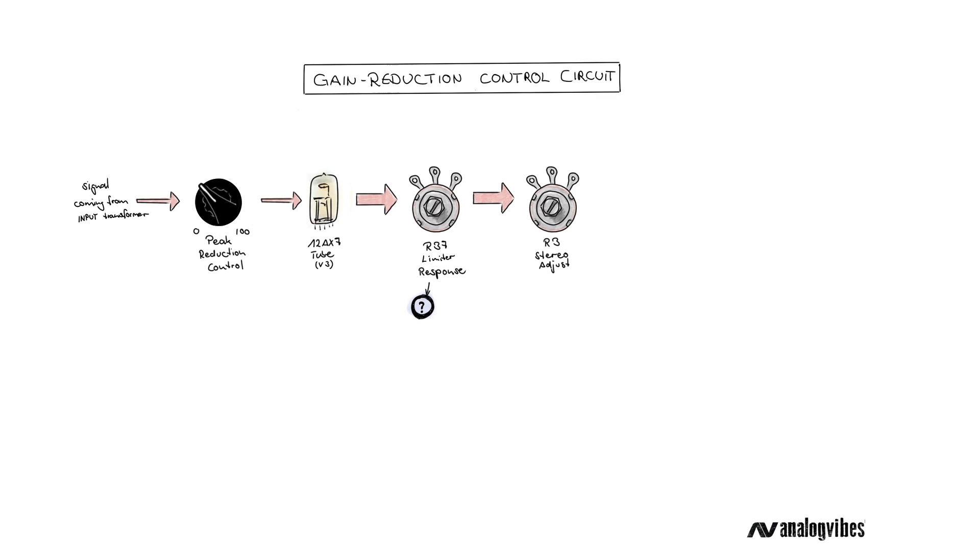Okay now, so what does the limiter response pot actually do? R37 within a certain range controls which frequencies the gain reduction circuit actually sees and how it reacts to them.